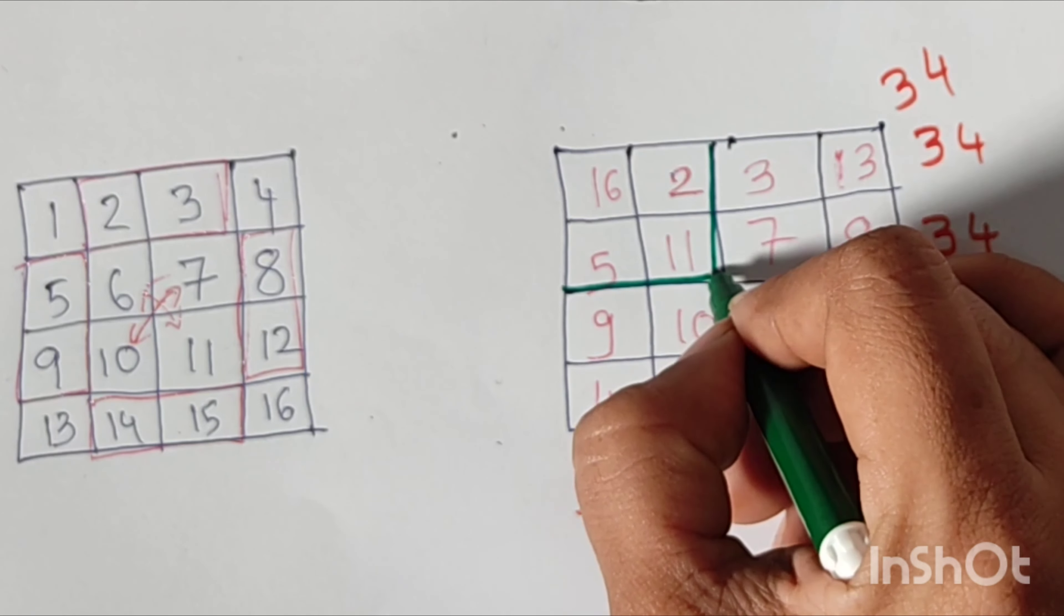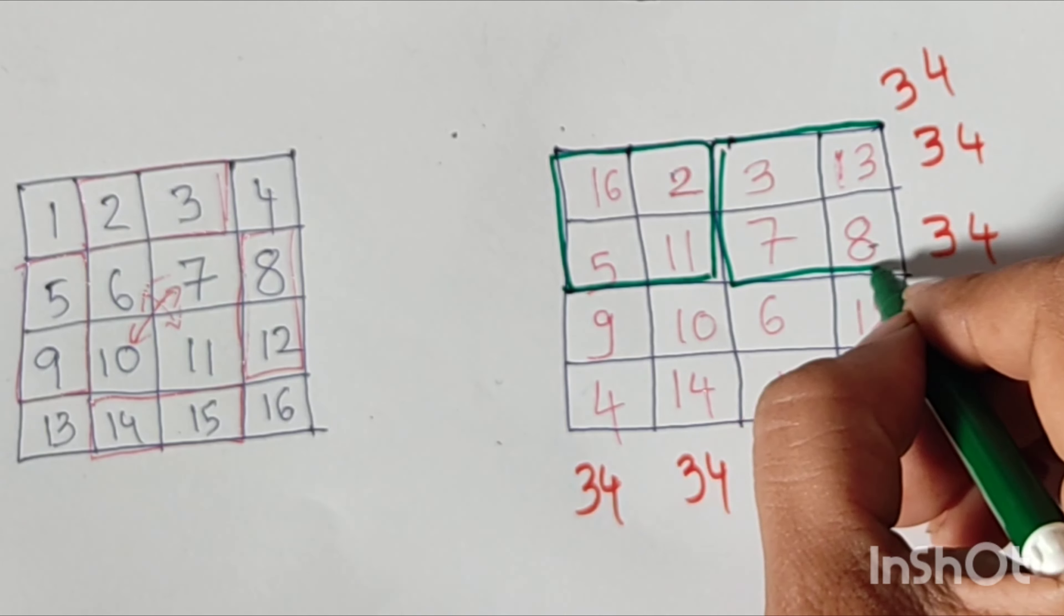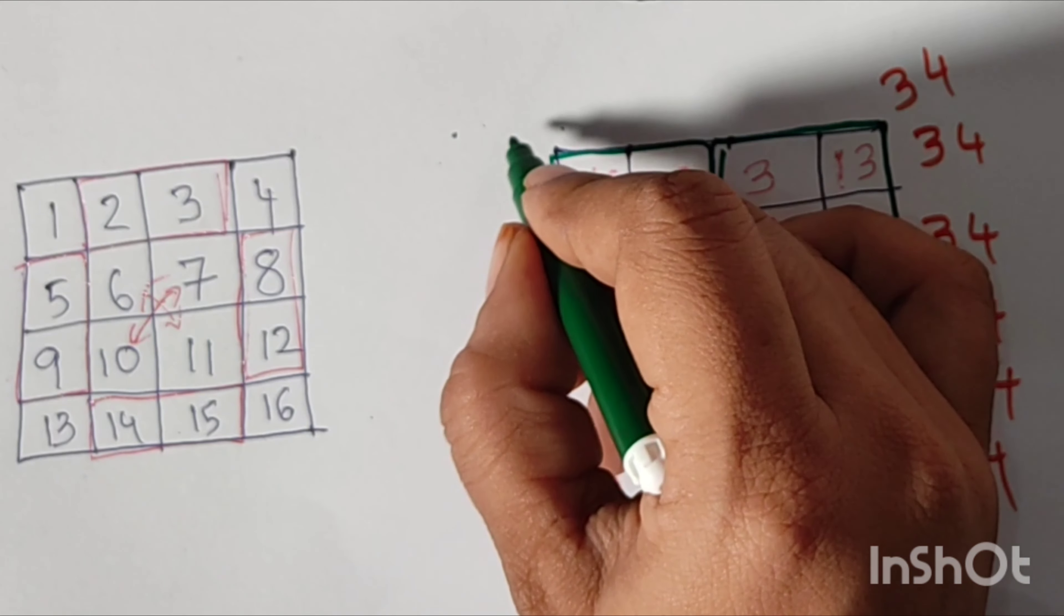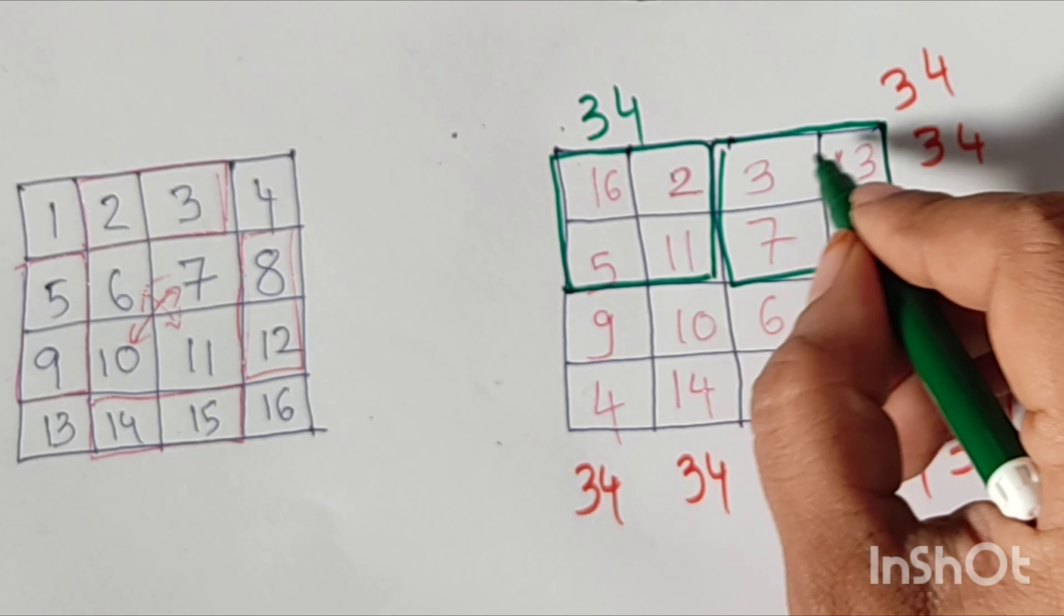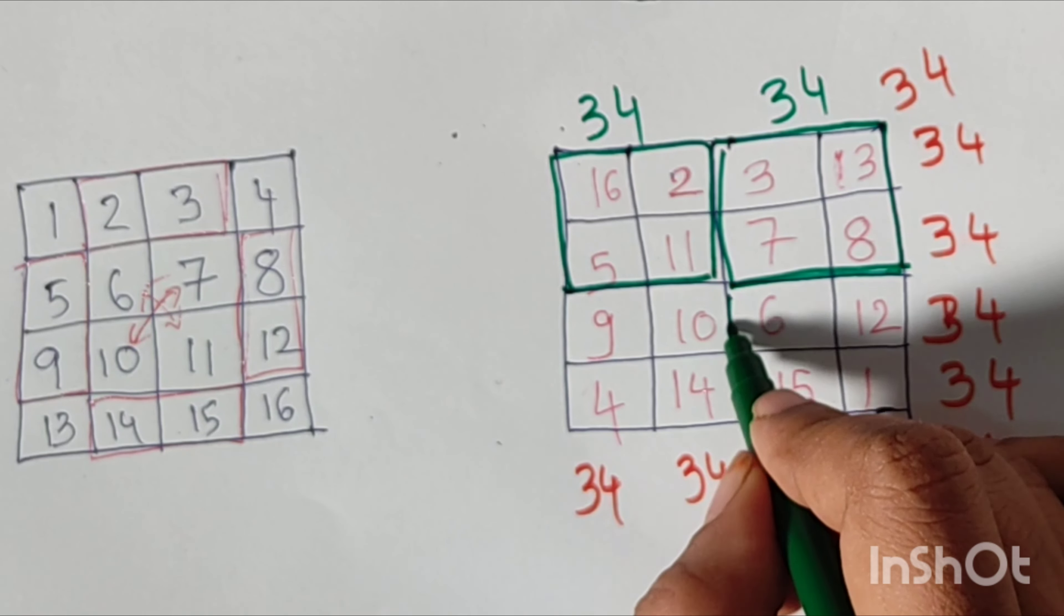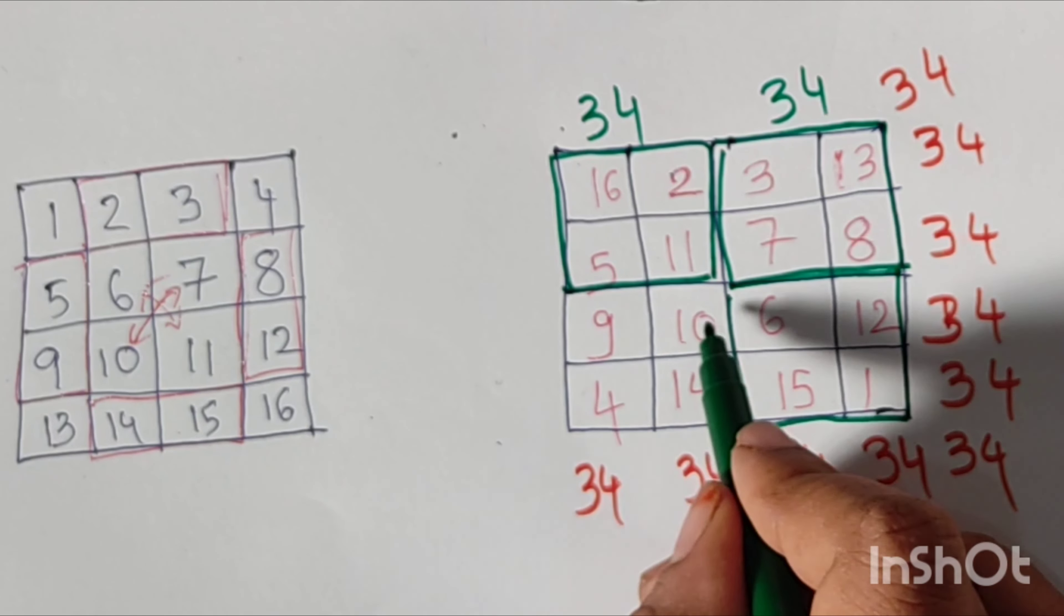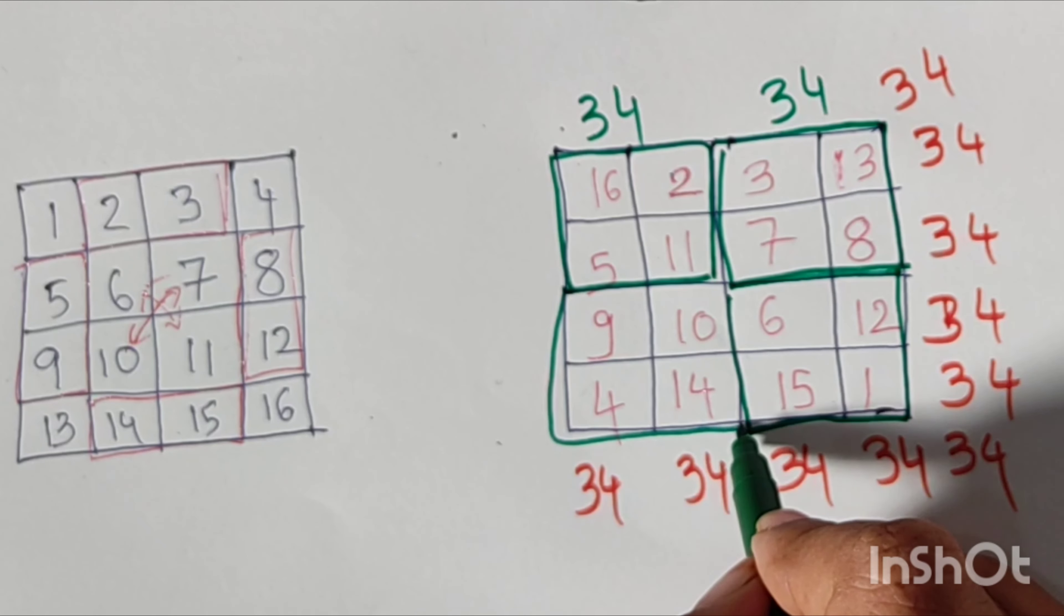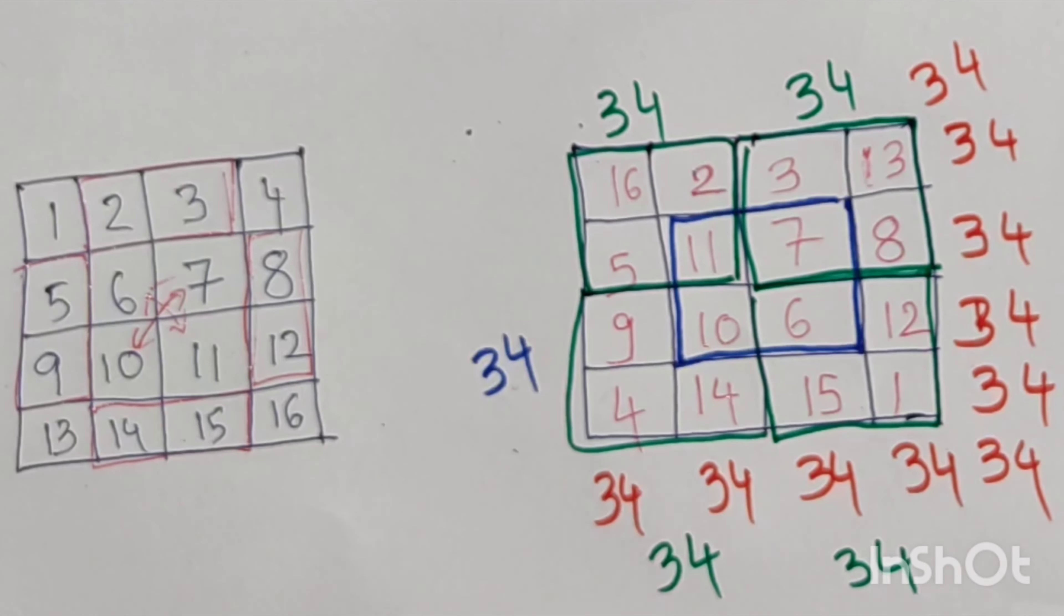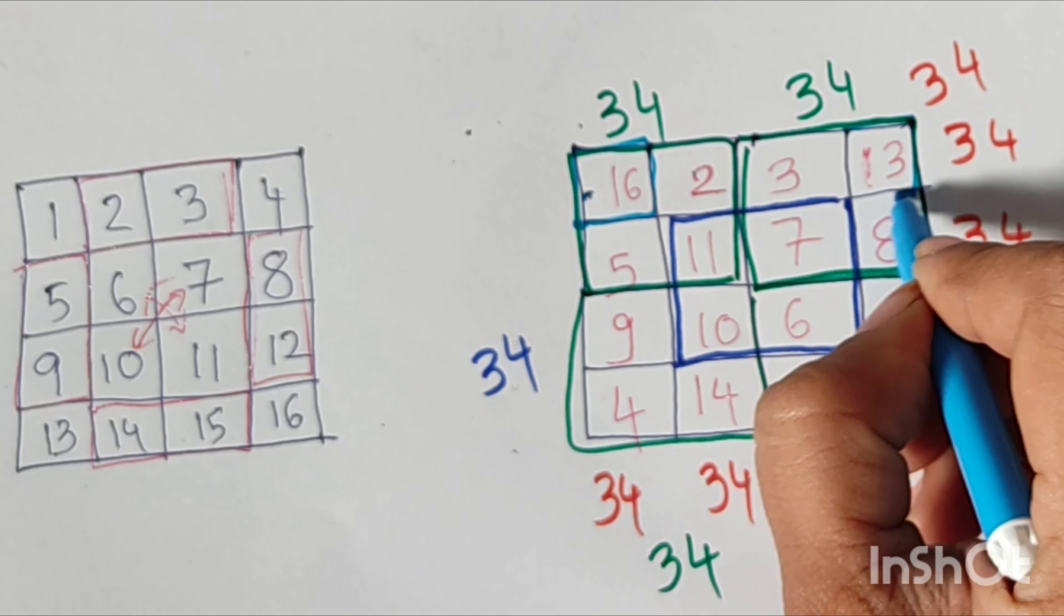Now we'll check the quadrants. First quadrant: 16, 2, 5, 11, the total will be 34. Second quadrant: 3, 13, 7, 8, the total will be 34. Third quadrant: 6, 12, 15, 1, the total will be 34. And the fourth quadrant: 9, 10, 4, 14, the total will be 34.